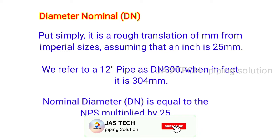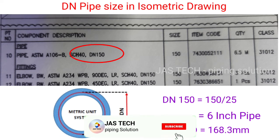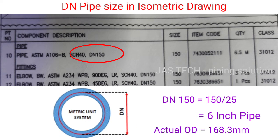The last term is DN – Diameter Nominal. Put simply, it is a rough translation of mm from imperial size, assuming that one inch equals 25 mm. The actual conversion is 25.4 mm, but using 25 mm, we refer to a 12 inch pipe as DN 300, when in fact it is 304 mm (12 × 25.4 mm = 304 mm). So, nominal diameter DN equals NPS multiplied by 25 mm. For example, DN 150 equals 150 divided by 25, which gives 6 — so it is a 6 inch pipe.